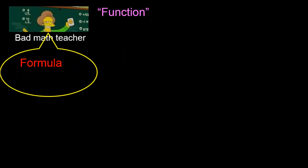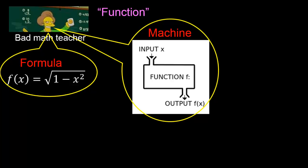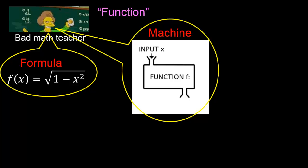In class, your bad math teacher might have taught you that a function is a formula. For example, we have the formula f(x) equals the square root of 1 minus x squared. She might also have encouraged you to think of a function as a machine — you give the machine an input x and the machine spits out the square root of 1 minus x squared.